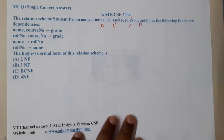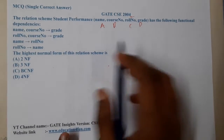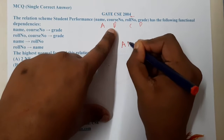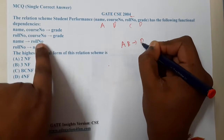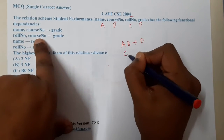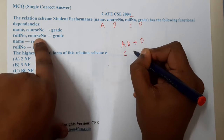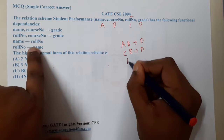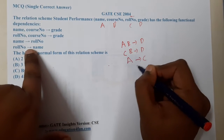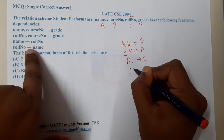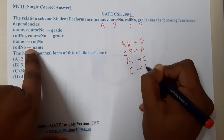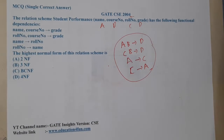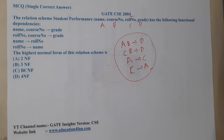The attributes are: Name = A, Course Number = B, Roll Number = C, and Grade = D. The functional dependencies given are: AB → D (Name, Course → Grade), AB → D, AC → B (Roll Number, Course → Name wait — AC → Name), and AC → A. These are the functional dependencies given in the question.